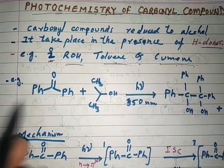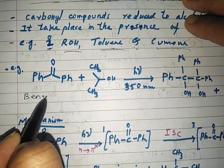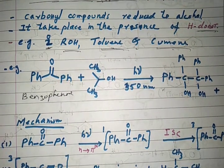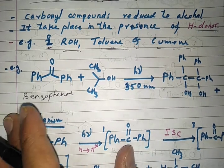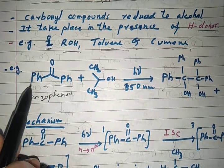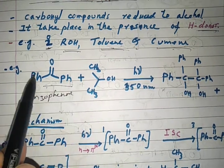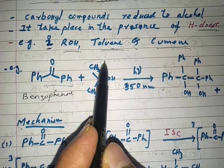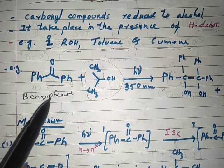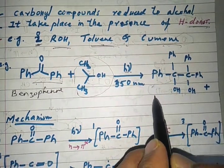Here an example is given. This is benzophenone. When benzophenone is irradiated, we know it is a very good compound which absorbs light from the UV-visible range. Its triplet energy is also very high, and therefore it can act as a photosensitizer. Here, in these two molecules, we take benzophenone in alcohol. Alcohol does not absorb light from the UV-visible region, so benzophenone will absorb the light. When they react in the presence of light, the product is benzopinacol.